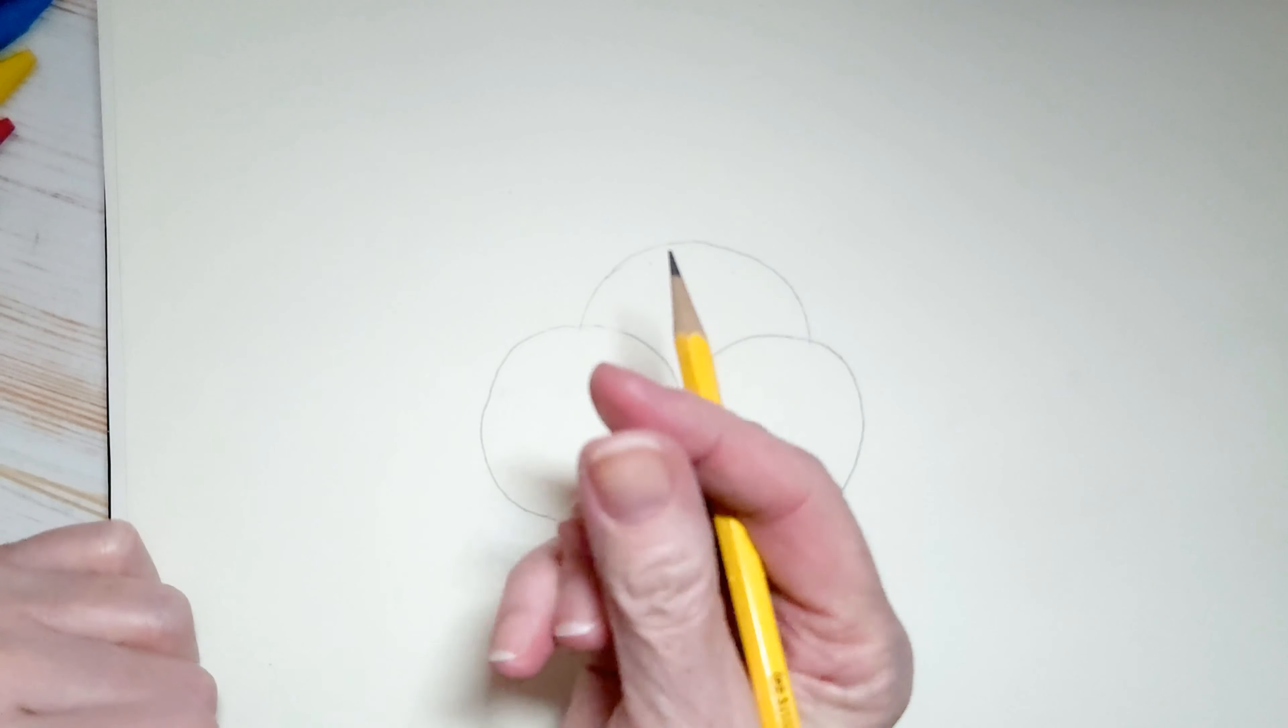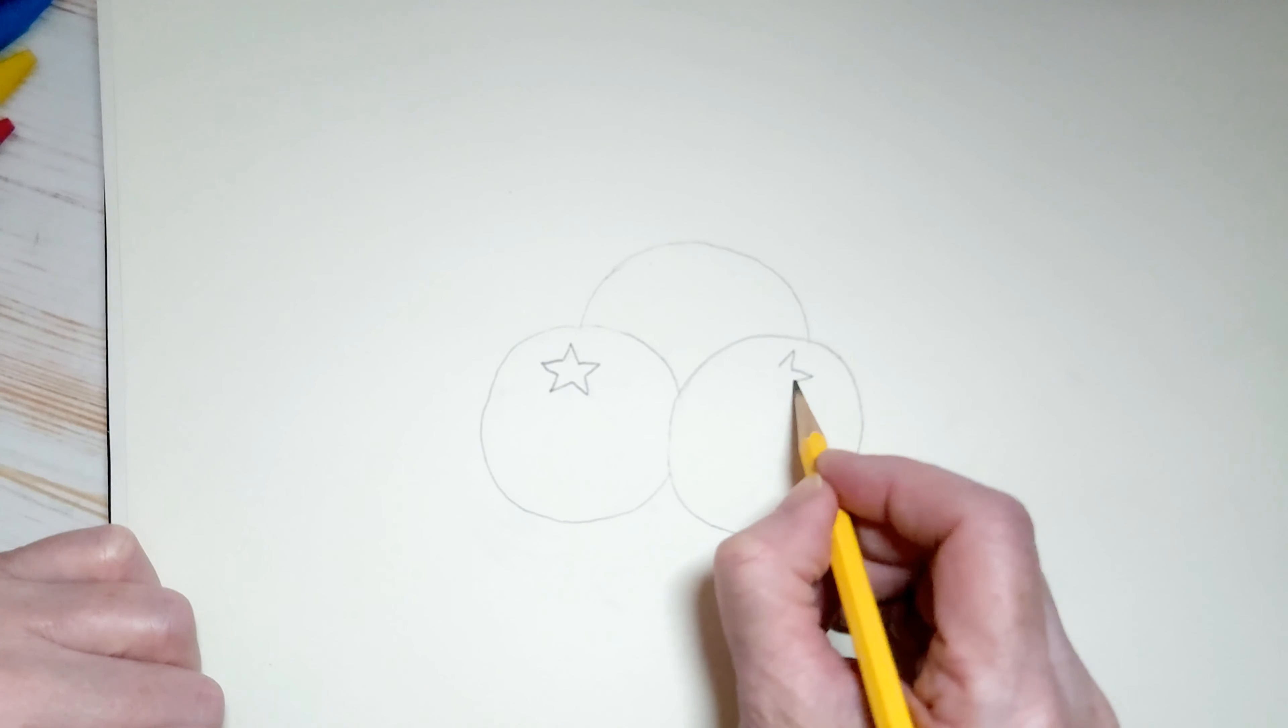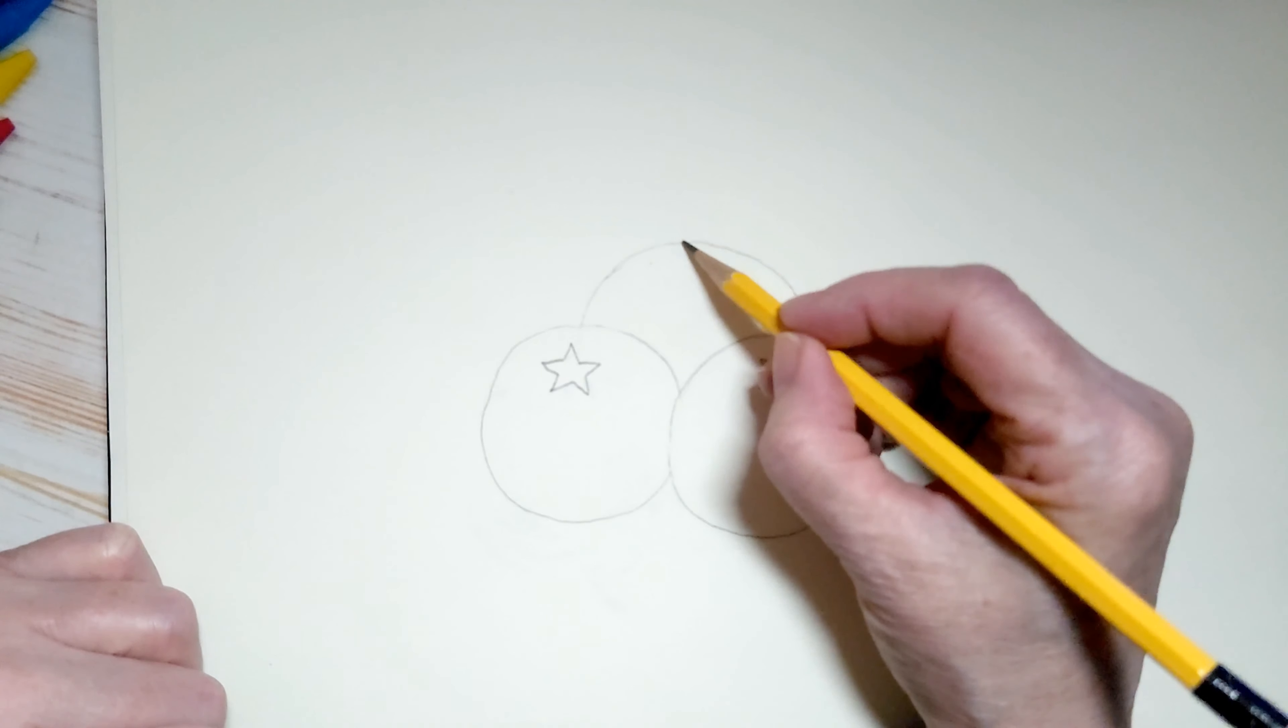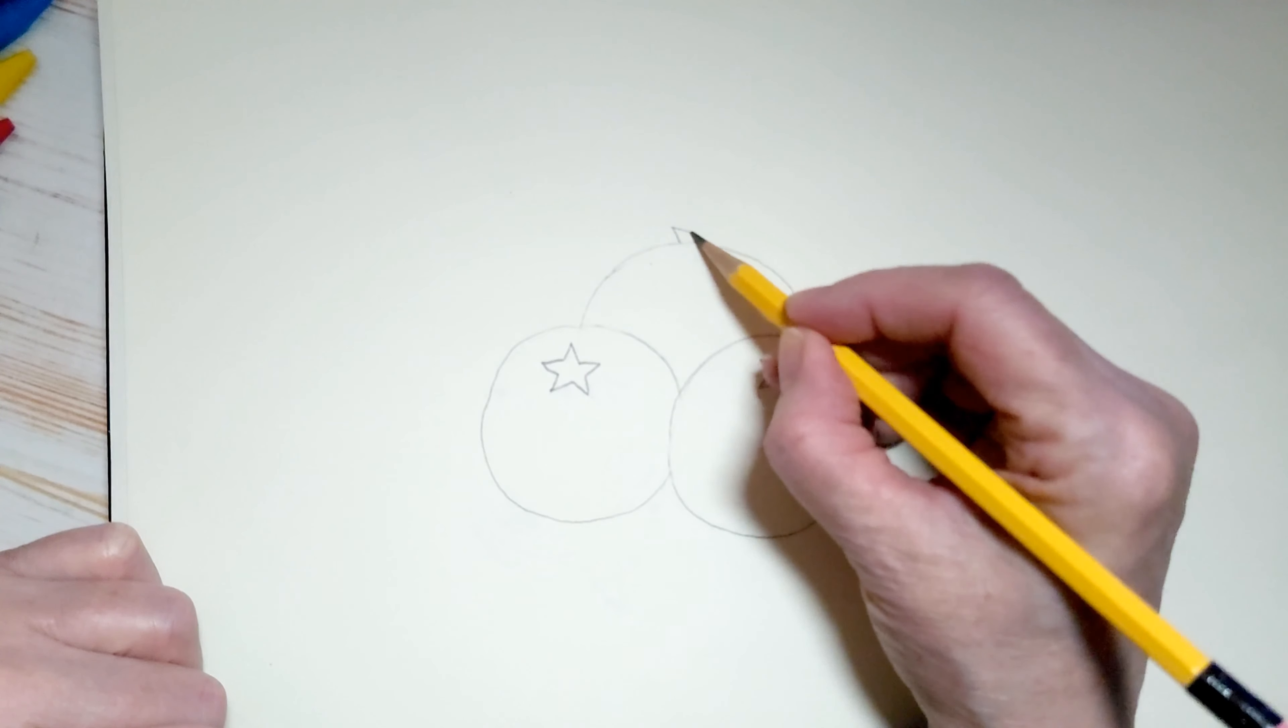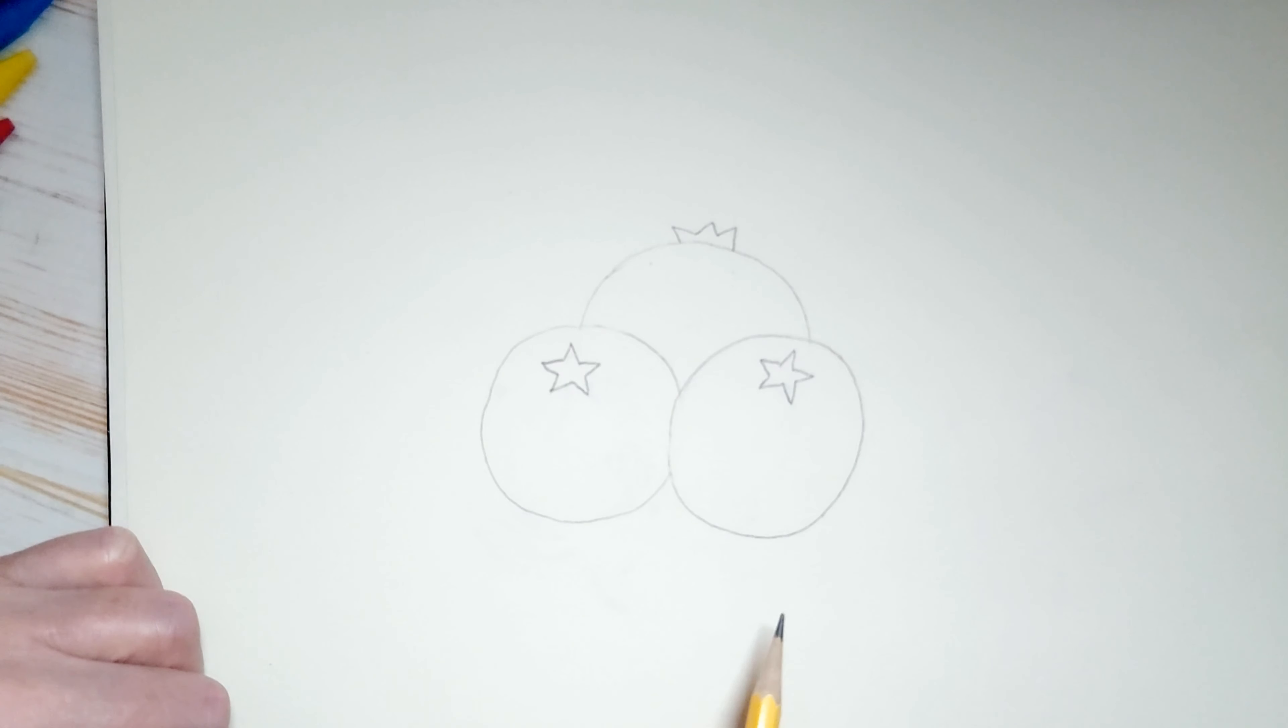So if you look at a blueberry on the top, they usually have what looks like a star. That's where they get picked off the tree. So on the top here, I'm going to draw a little star shape. And on this one too. But on this one, I'm going to just draw three little bits on the top, just like that. And I'm going to draw a few leaves coming out the sides.